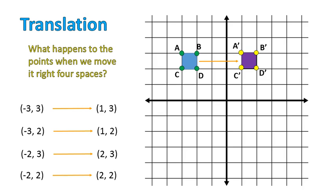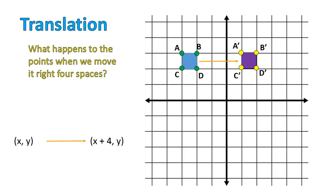So the way that we would write this is, XY becomes X plus 4, Y. Again, the Y values stay the same. The X values, we're adding 4. So you can take this and actually use it for any translation. Look at where a point moves, determine what changed, the X value or the Y value, and then make a rule based on that.